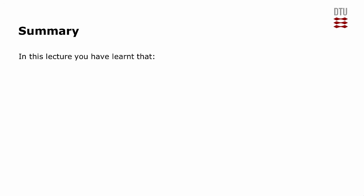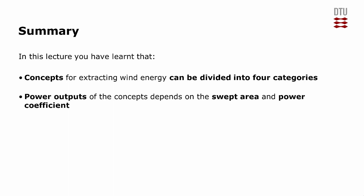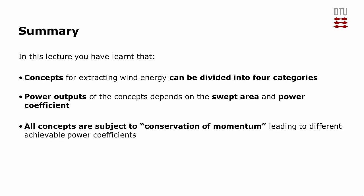Finally, we come to the summary of this lecture. In this lecture, you should have learned that the concept of extracting wind energy can be divided into four different categories. The rotating lift-based machines, the rotating drag-based machines, the flying lift-based machines, and machines that are extracting the energy due to flow-induced vibrations. The power output from each concept will depend on the area they sweep and their power coefficient. That is in fact how we define the power coefficient. They are all subject to conservation of momentum and therefore they also have, each of them, different power coefficients.